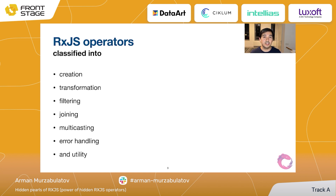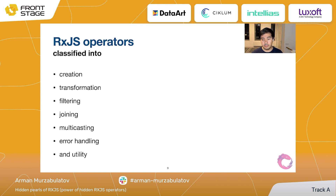I've been using RxJS quite intensely for the last four or five years, and I'm aware of maybe 50 to 60 operators. I use only about 10 of them in daily life. However, there are some operators that are not commonly known or used that frequently, but they're quite useful and very good to know — because when you don't know what you don't know, remembering those operators and using them might really make life easier.